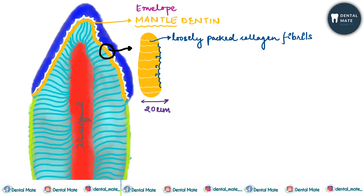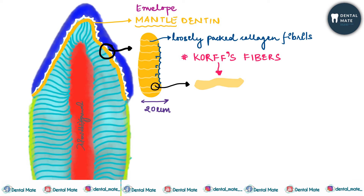At an ultrastructural level, the collagen fibrils in mantle dentine are perpendicular to the dentino-enamel junction. Certain large diameter collagen fibrils are known as coarse fibers — they are argyrophilic. These large diameter collagen fibrils, or coarse fibers, are argyrophilic and measure 0.1 to 0.2 micrometers in diameter. These are type 3 collagen.